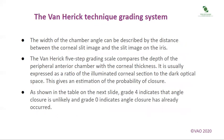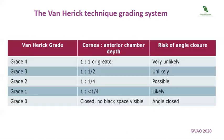The grading system: the width of the chamber angle can be described by the distance between the corneal slit image and the slit image on the iris. The Van Herrick 5-step grading scale compares the depth of the peripheral anterior chamber with the corneal thickness. It is usually expressed as a ratio of the illuminated corneal section to the dark optical space, giving an estimation of the probability of closure. Grade 4 indicates that angle closure is unlikely, while Grade 0 indicates angle closure has already occurred.